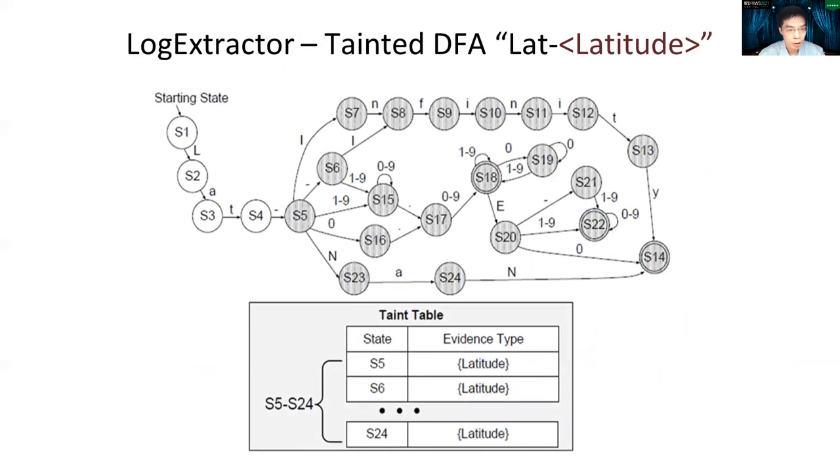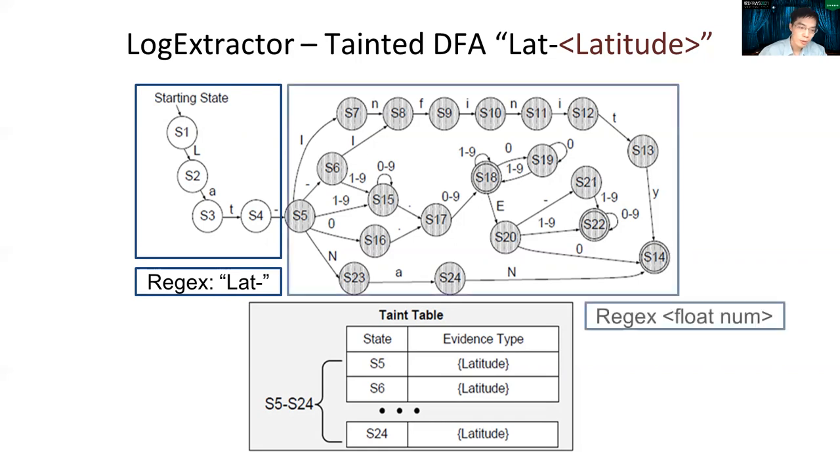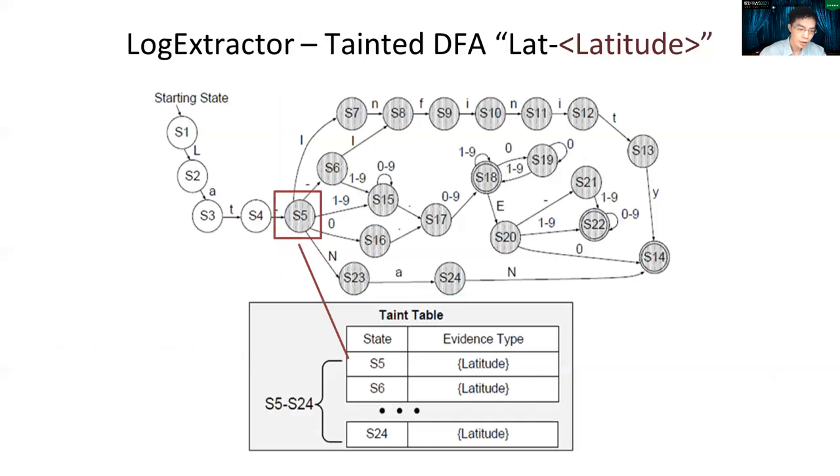This is the tainted DFA representing our previous example. As you can see, the left-hand side is the part for the constant string LAT and hyphen. And the right-hand side is the floating number string with evidence type latitude. So beside the DFA, we add a tainted table for each state within the DFA to track evidence type propagation in the app program. In this example, any character being matched by the right-hand side will be a part of the latitude string output.